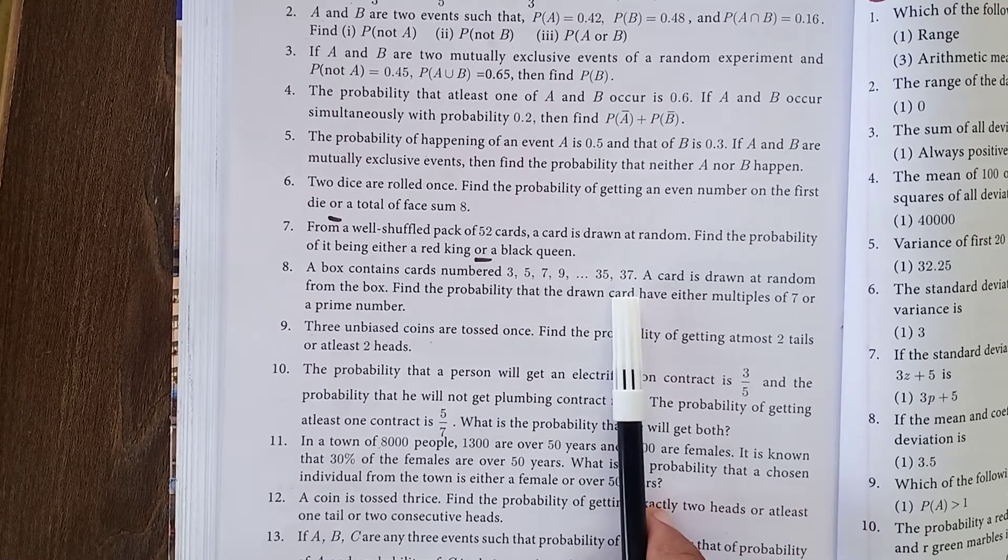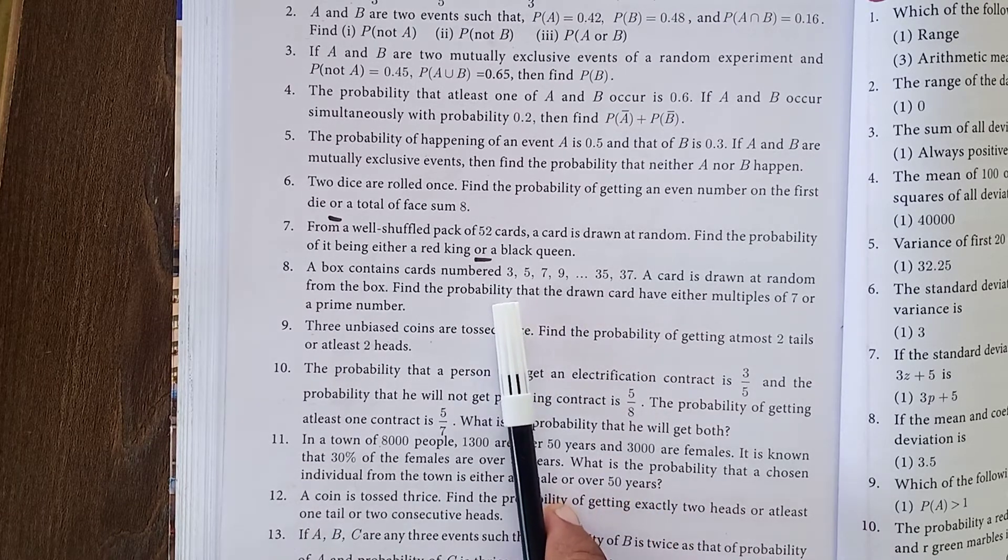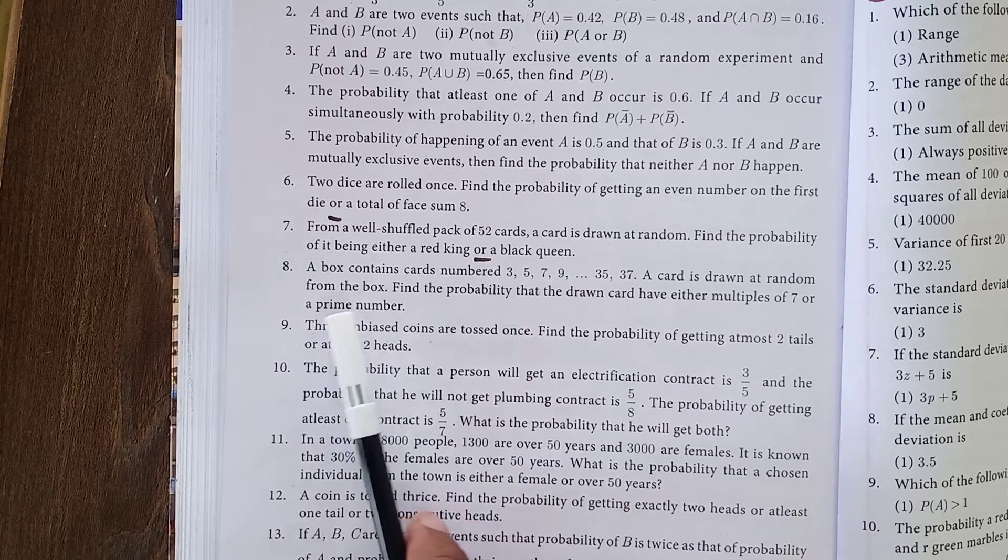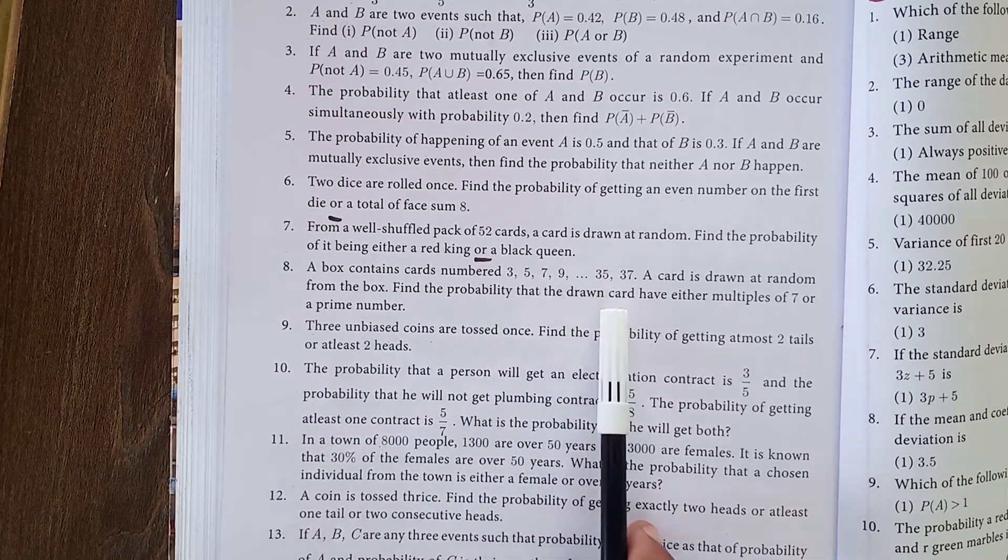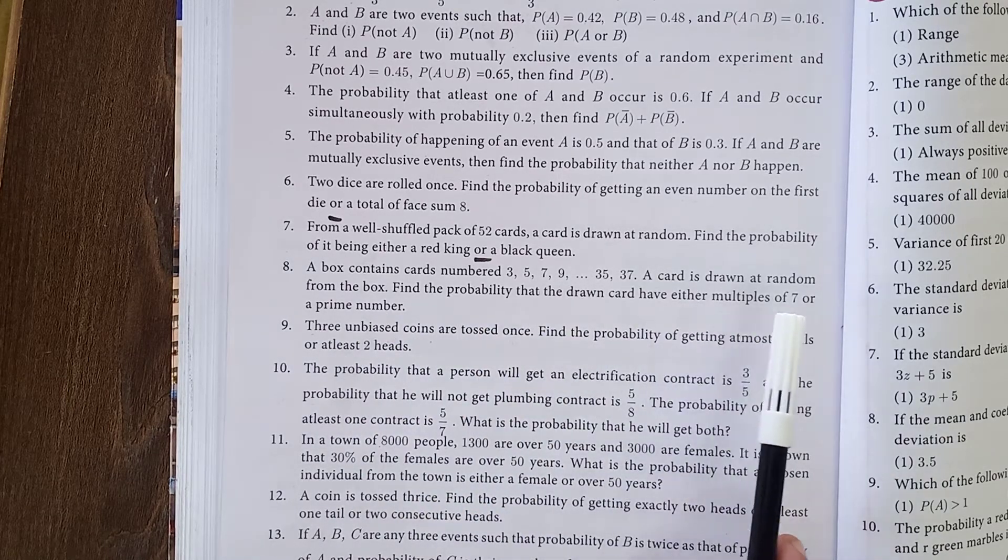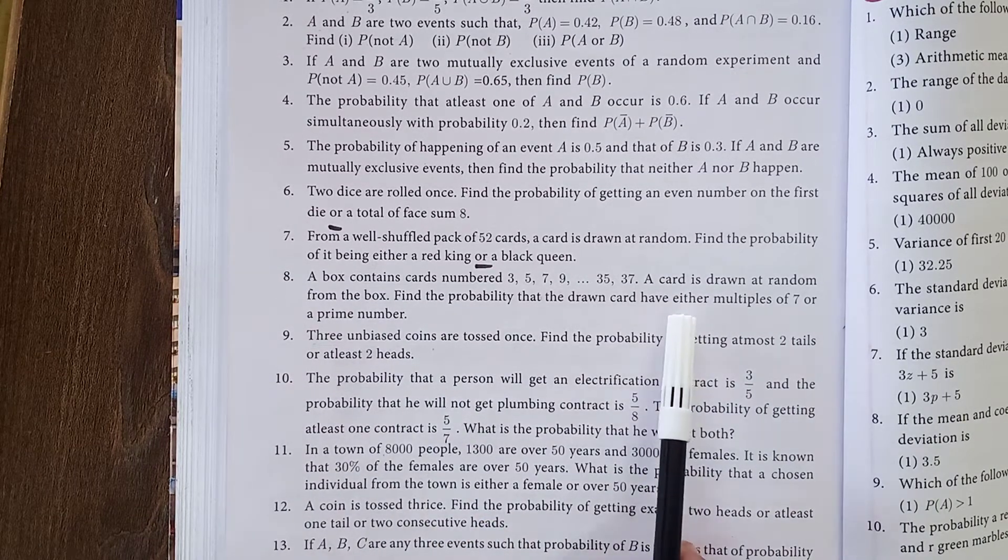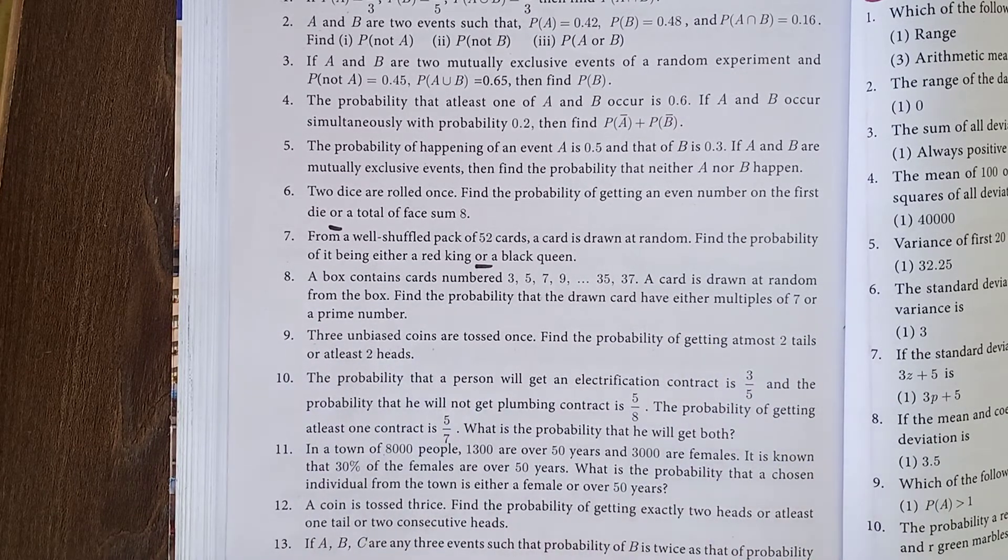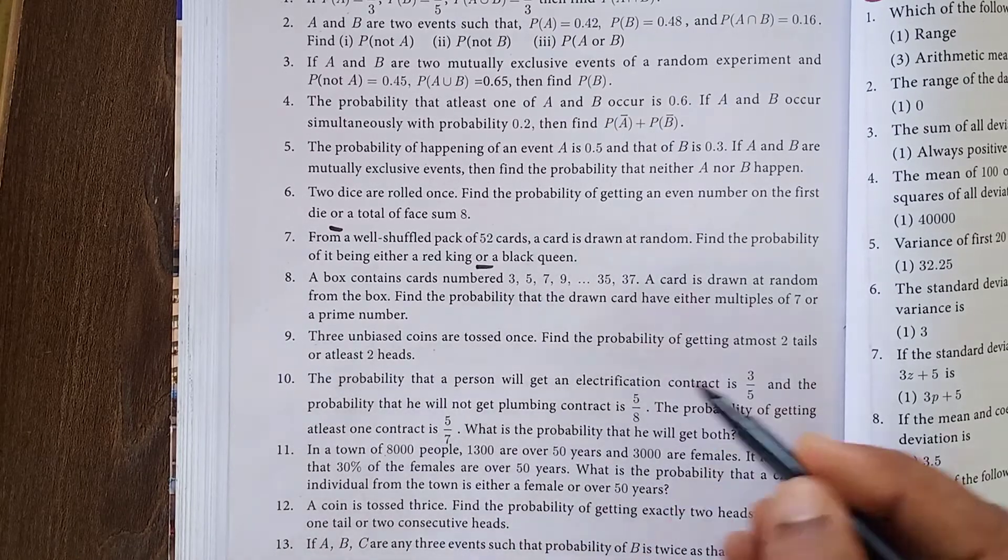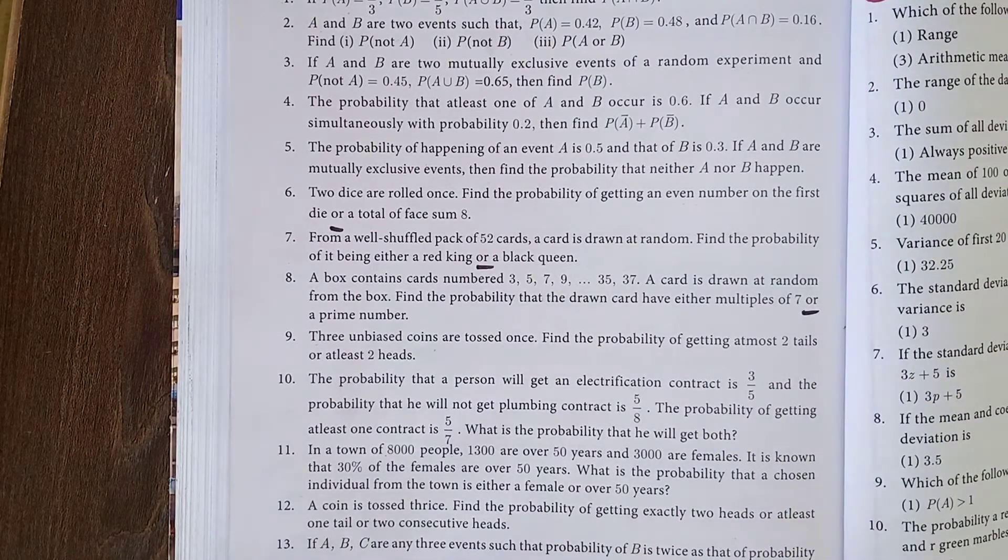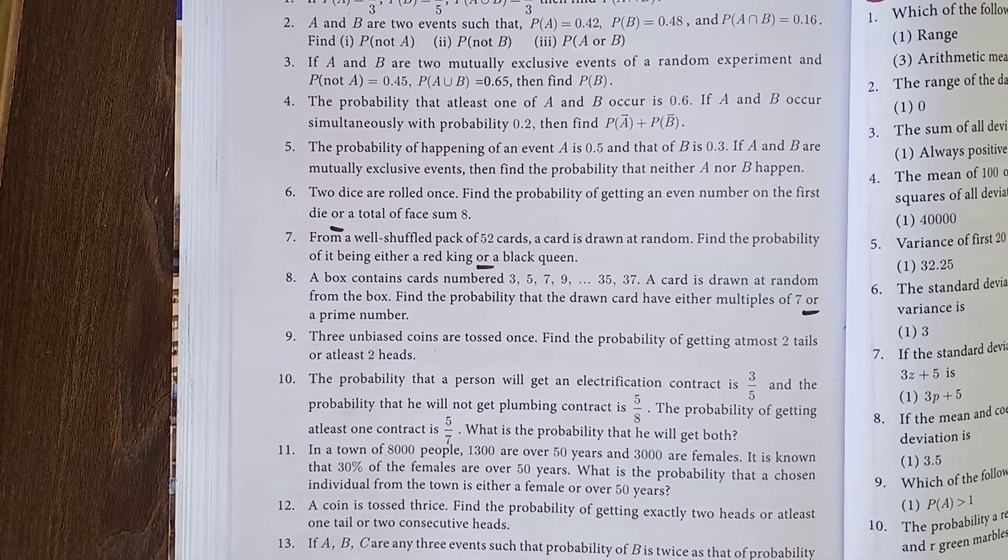So all odd numbers only, starts with 3. A chord is drawn at random from the box. Find the probability that the drawn chord have either multiple of 7 or a prime number. Look at the word 'or' - that means you have to find out A union B, right.